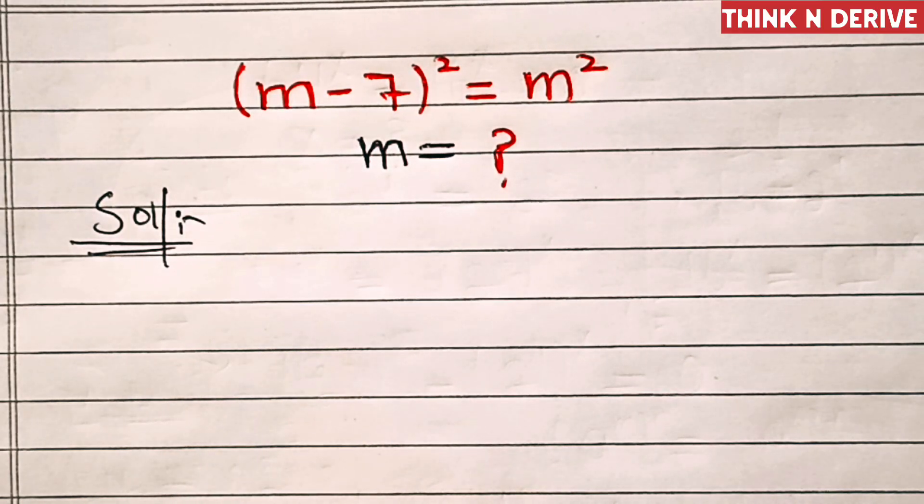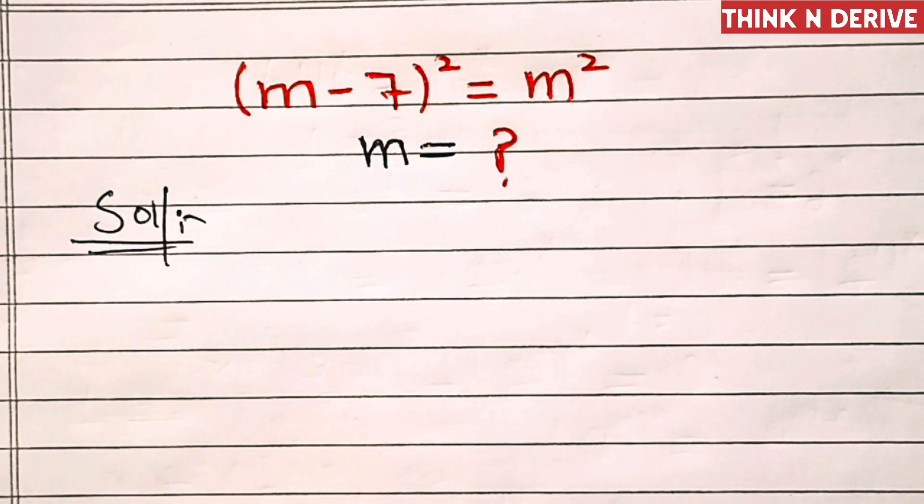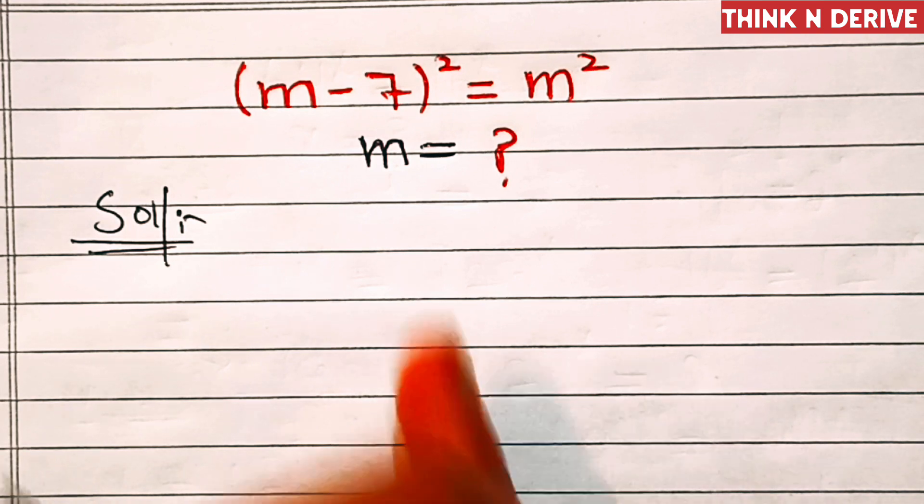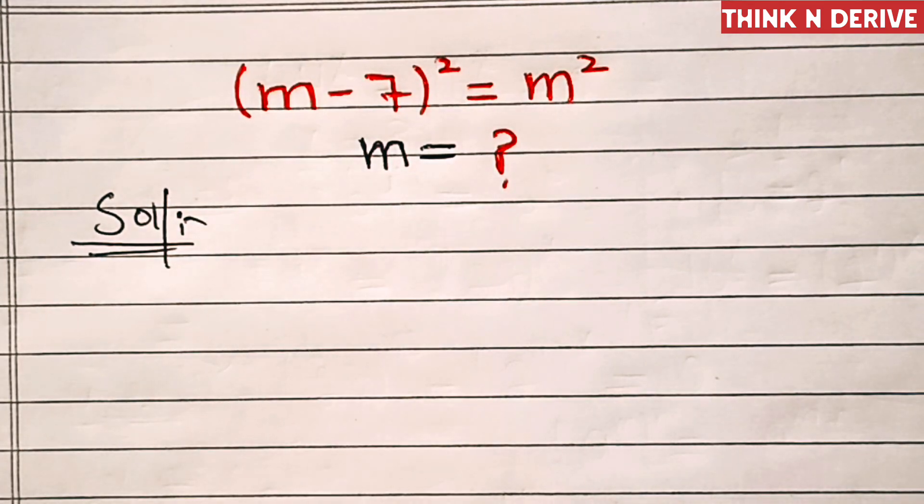Hi friends, m minus 7 whole square equals m square, and we have to find the value of m. So let's start.